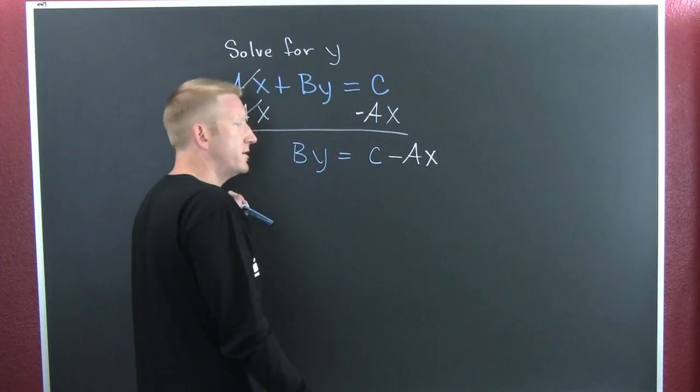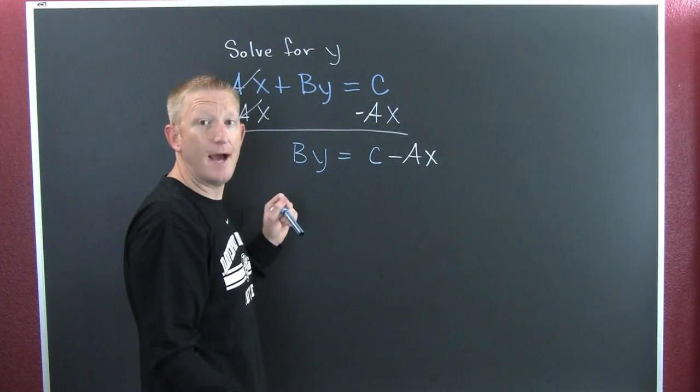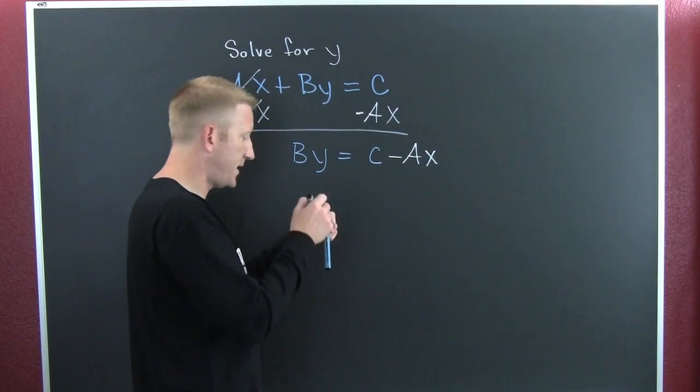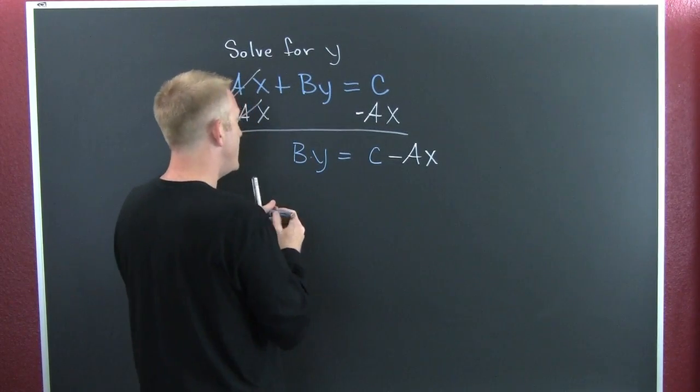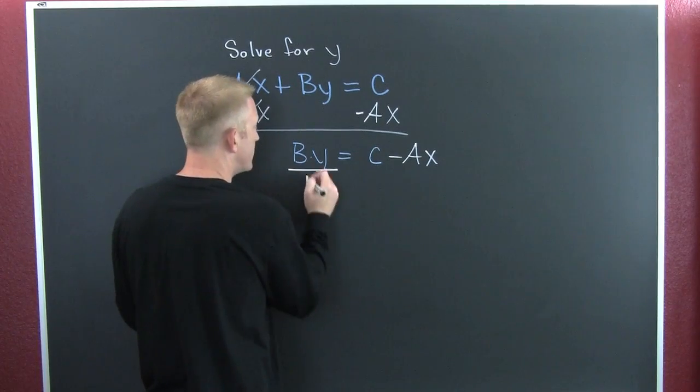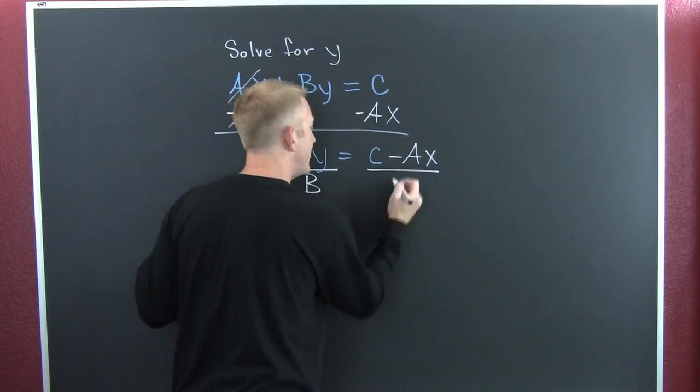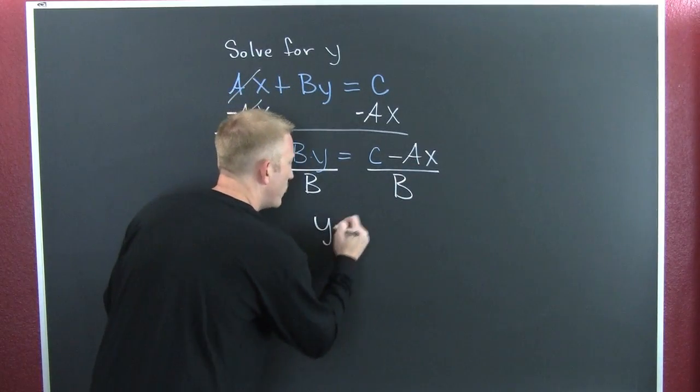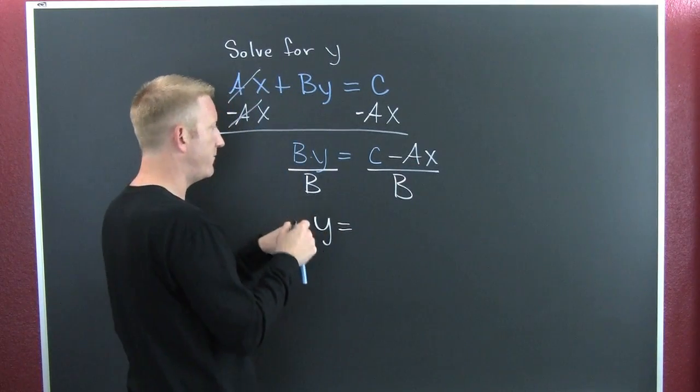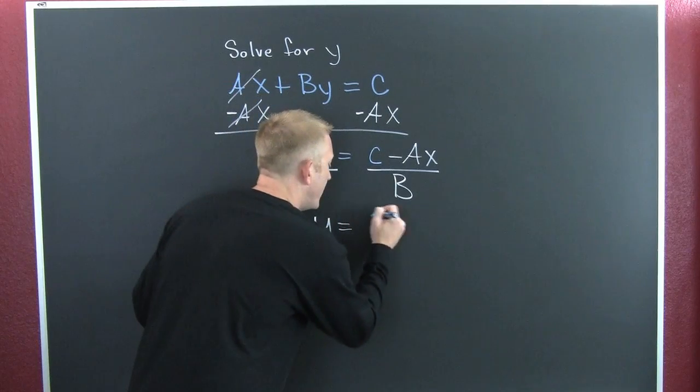Now we want to undo this multiplication. How do we undo the multiplication? With a little bit of division in our lives. Because what we do on one side we must also do to the other. We divide the left side by b and we divide the right side by b. And then we are left with y is going to be, wait for it, c minus ax all over b. Oh boy.